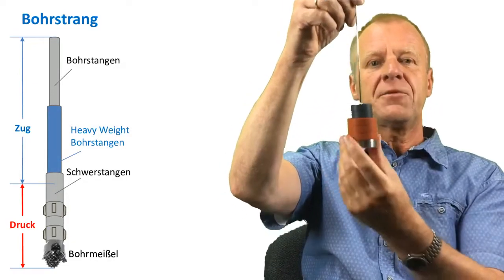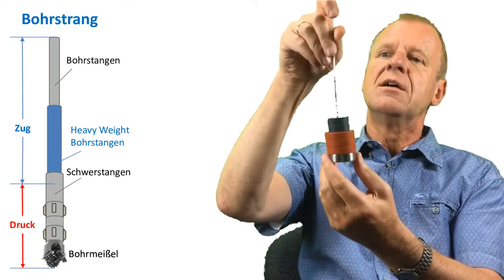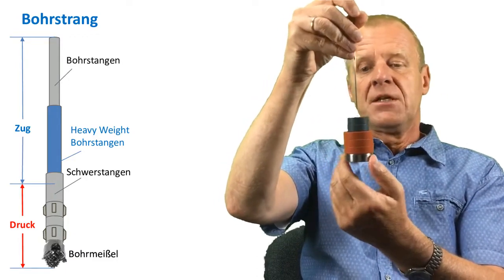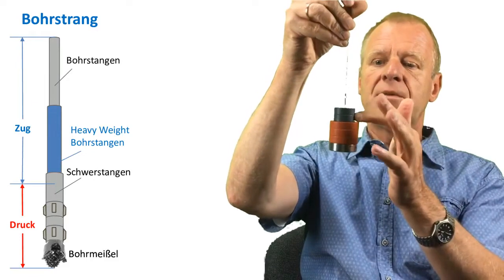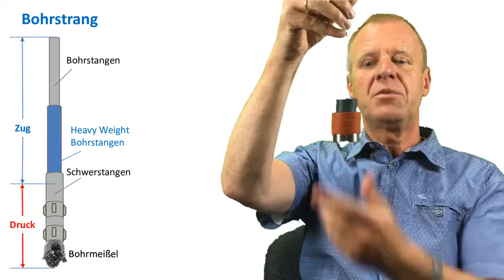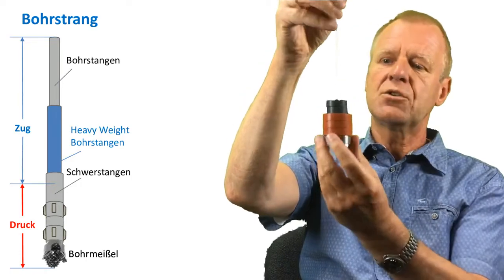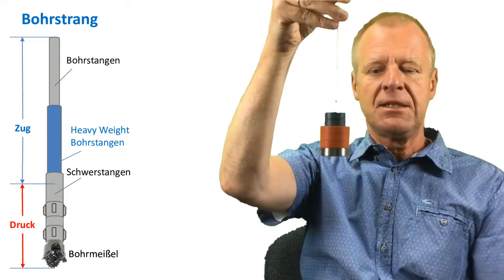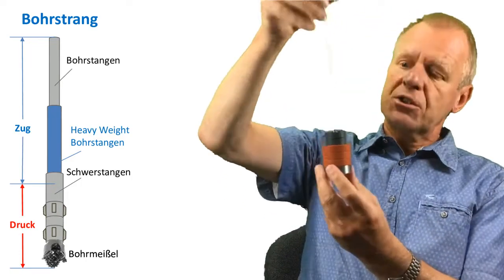With the heavyweight drill pipe we ensure that the drill string above the heavyweight drill pipe remain in tension while the drill collars below remain in compression. So we avoid buckling and breaking of the drill string.